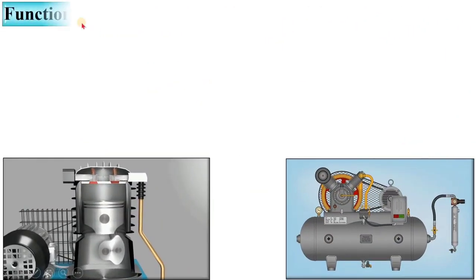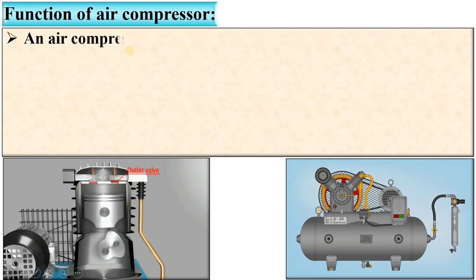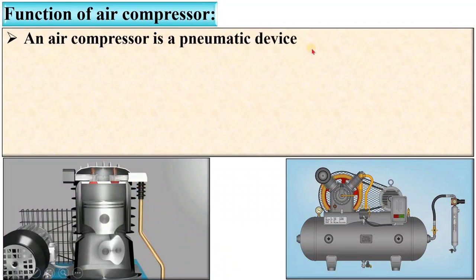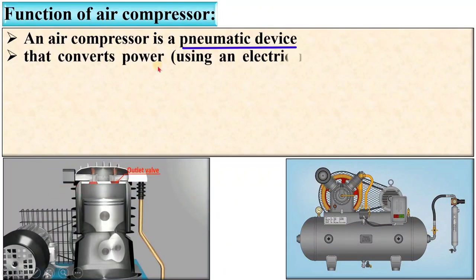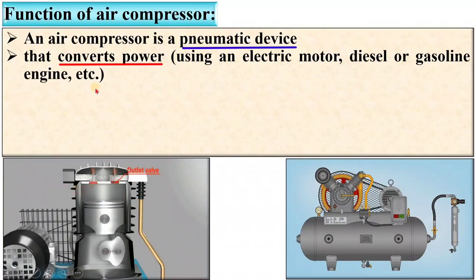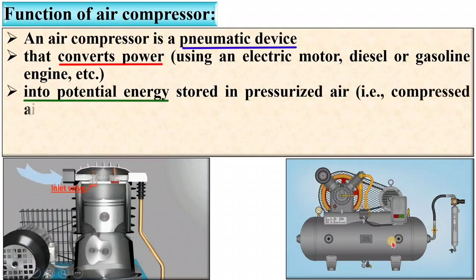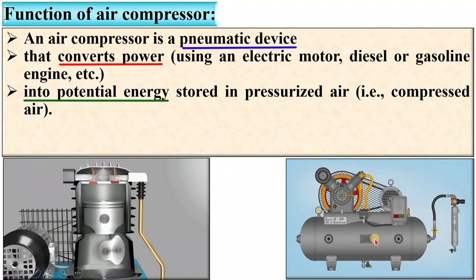Let us see the function of an air compressor. An air compressor is a pneumatic device that converts power — by using an electric motor, diesel or gasoline engine, etc. — into potential energy stored in pressurized air, that is called compressed air.